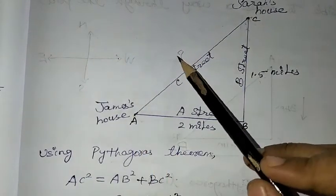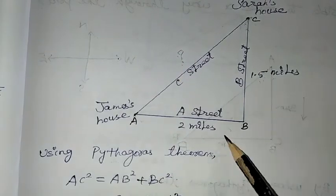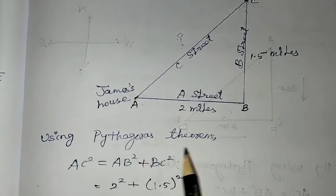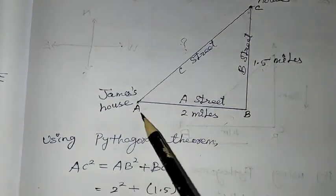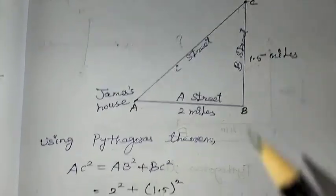It's a right angle triangle, so this is the hypotenuse, sum of the squares of the other two sides. By using Pythagorean theorem, AC square is equal to AB square plus BC square.